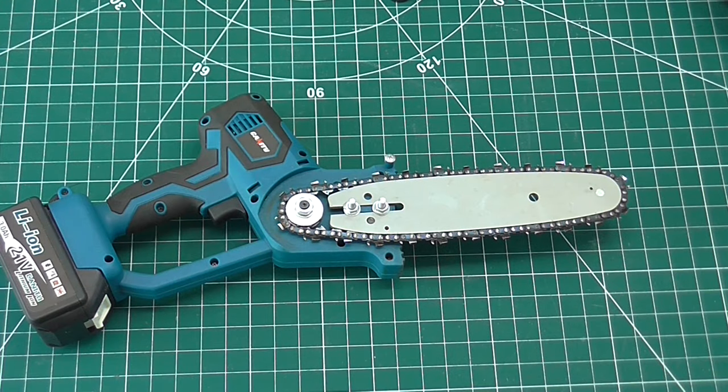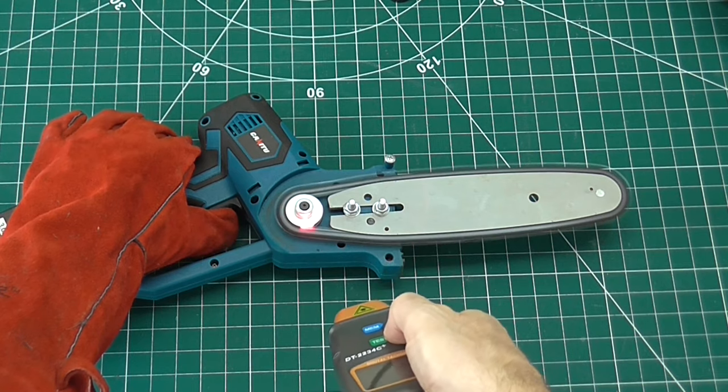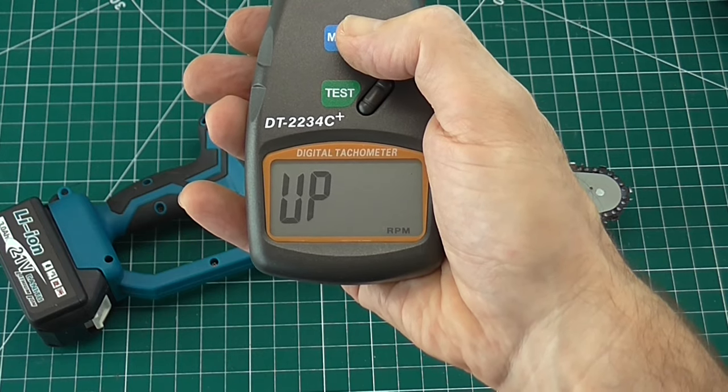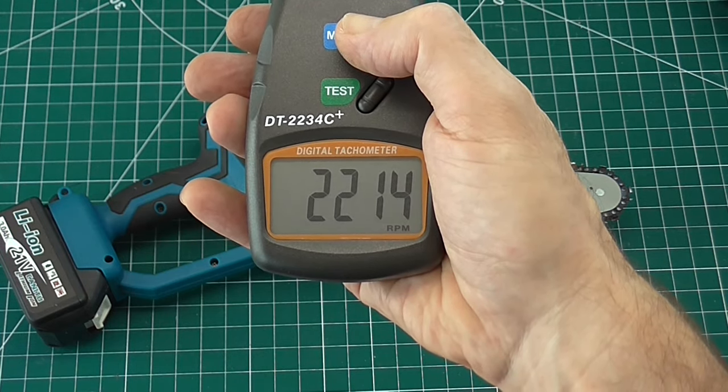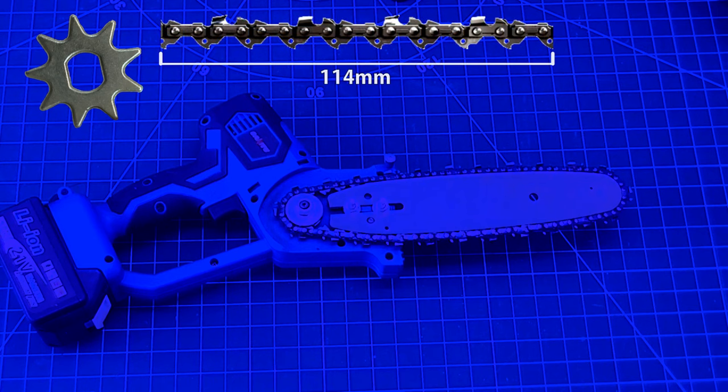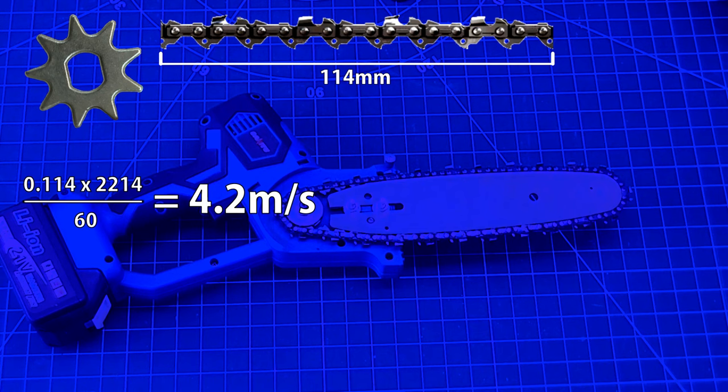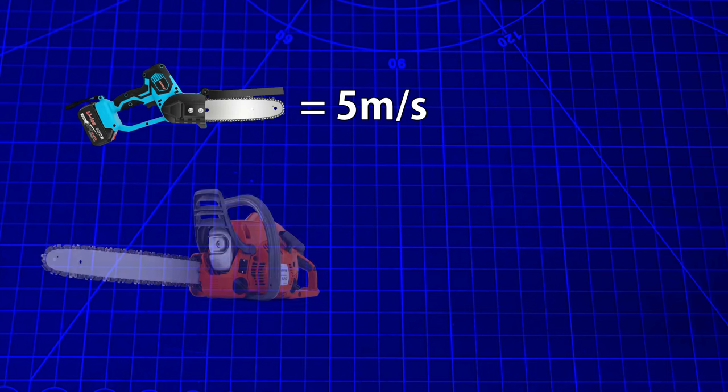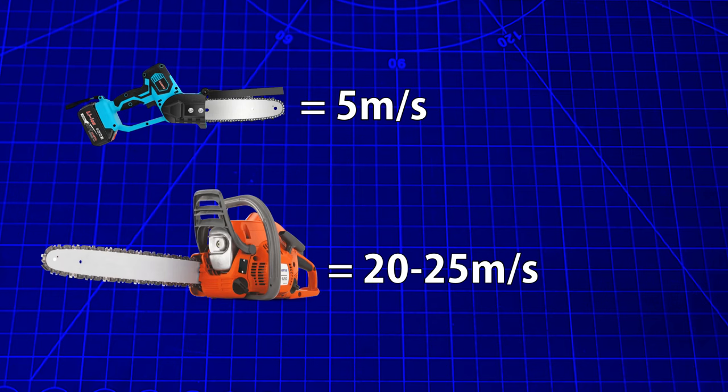Here I'm running the saw with the chain cover removed, so I can measure the speed of the chain. Obviously this is not recommended. 2200 RPM. The sprocket has 9 teeth. 9 drive lengths of the chain measure 114 millimetres. That works out to 4.2 metres per second. Again, not far off from the 5 metres per second claimed in the manual. And once run in, it might even go a bit faster. But compare that to a regular chainsaw, which will have a chain speed of 20 to 25 metres per second. And that will give you some idea how this saw is going to perform.